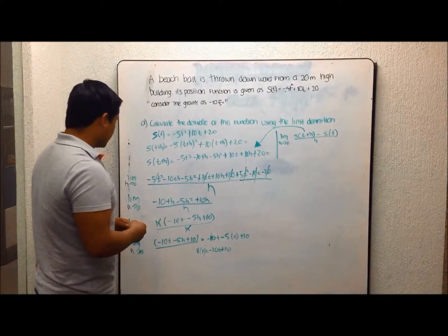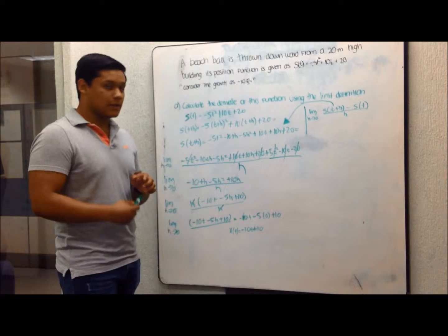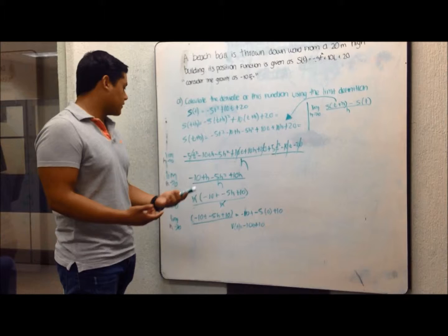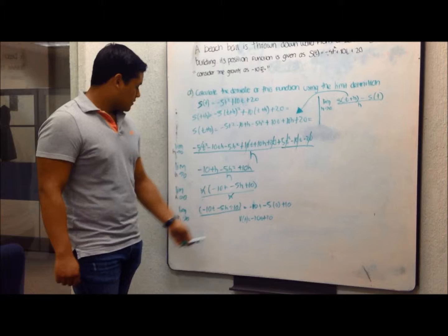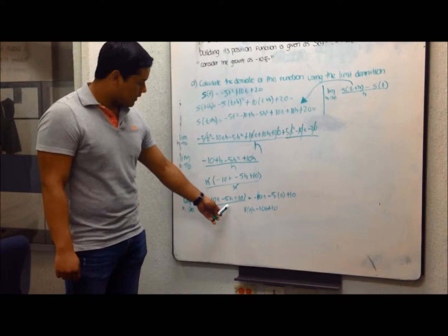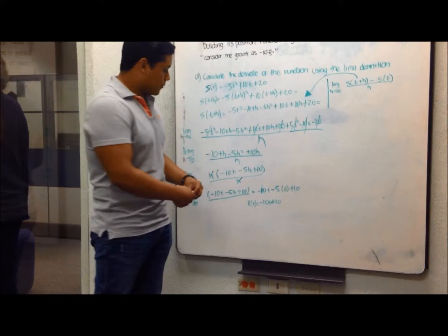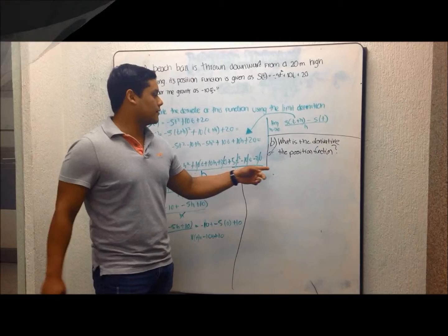So now I eliminate all canceling terms. It gives me: limit as h→0 of (-10th - 5h² + 10h) all over h. Now I factorize h, giving h(-10t - 5h + 10). Canceling h and substituting h = 0 gives the derivative.